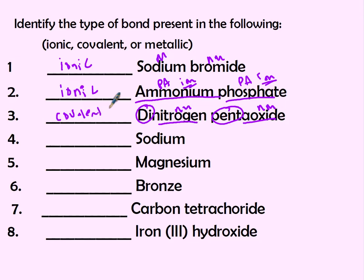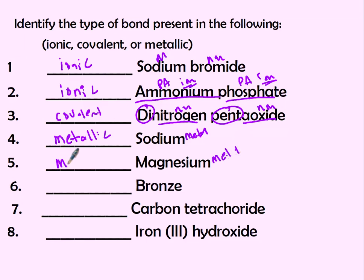We used prefixes when it was covalent, and when it's two non-metals they're going to share electrons. Sodium is just a metal, so that's a pure metal — metallic. Magnesium is also a pure metal, so that would also be metallic. Bronze is an alloy, one of those common names, so you should have said metallic for that one.